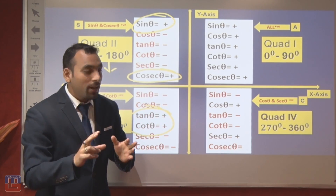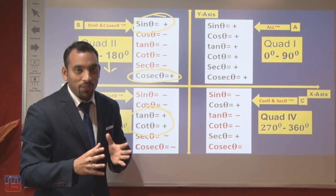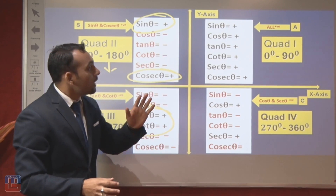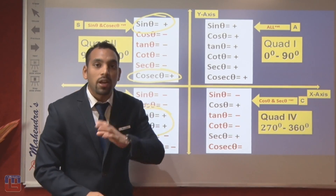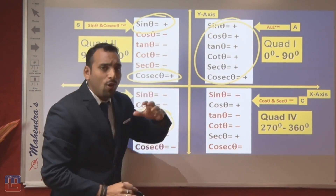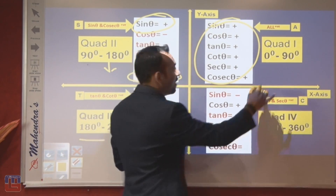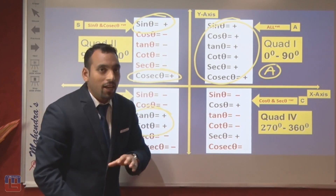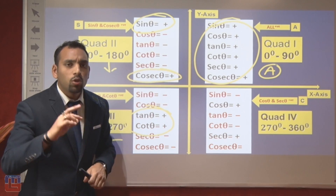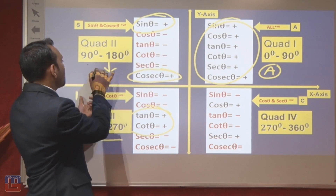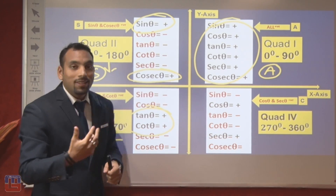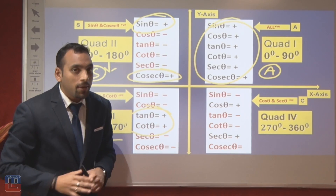To summarize the four quadrants: in the first quadrant (0° to 90°), all six ratios are positive — we call this 'A'. In the second quadrant, only sine θ and cosec θ are positive — we call this 'S', since cosec is the reciprocal of sine.